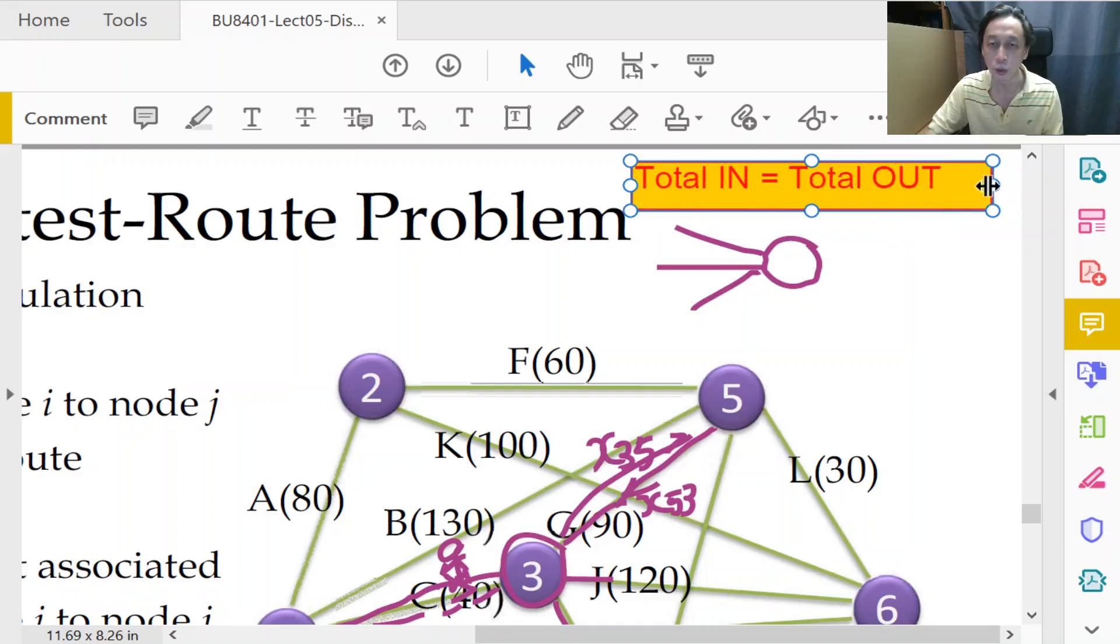So, so long as we ensure that total in is equal to total out, we express that as a constraint for an intermediate node like 3, then we are done.